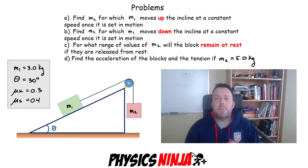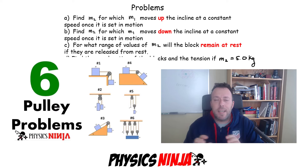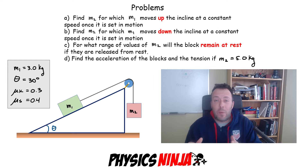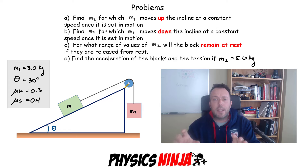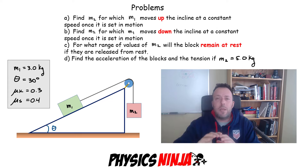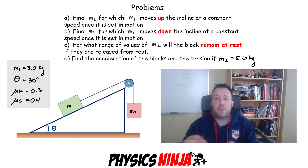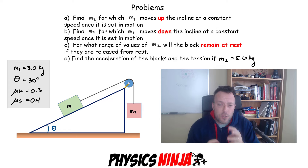Hi everybody, Physics Ninja. Some time ago I made problems with pulleys and blocks connected to them. In all of those problems I didn't include friction — they were kind of simple. In this case, what I want to do is include kinetic and static friction, and look at different cases dealing with this incline setup. I have two blocks connected by a very thin string going over a pulley, neglecting the mass of the pulley.